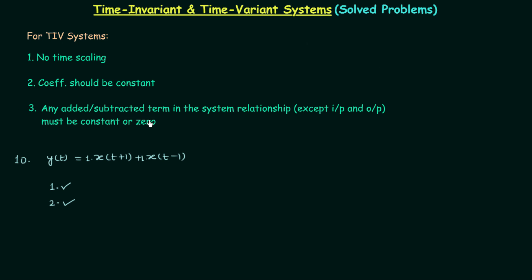Now let's check the last condition: any added or subtracted term in the system relationship except input and output must be constant or 0. Here we have the output term, an input term, and another input term. There is no other term except inputs and output, therefore the third condition is also satisfied. If there was any added or subtracted term, it should not be a function of time. As all three conditions are satisfied, the system is a time invariant system. It is pretty easy to check if the system is time invariant or time variant when you know the three conditions.